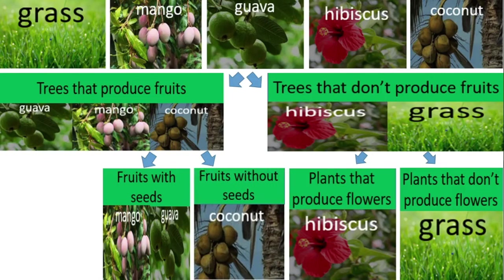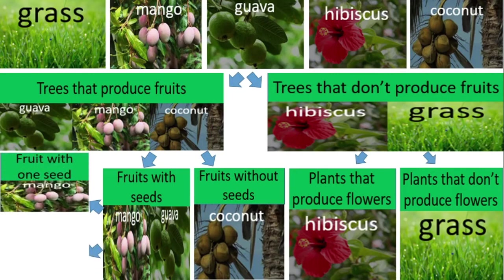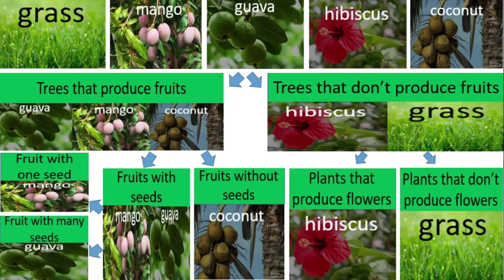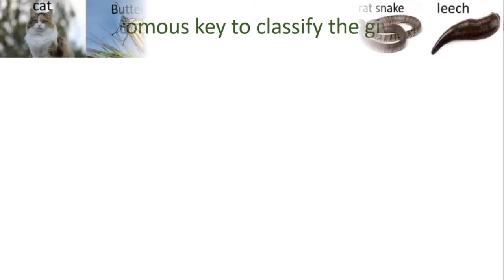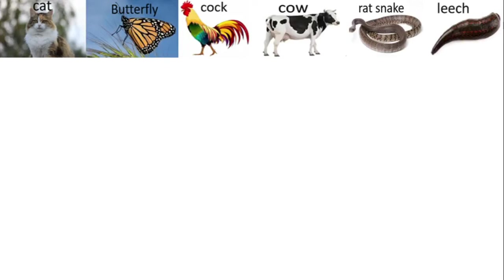Mango and guava can be categorized into two categories: mango under fruits with one seed, and guava under fruits with many seeds. Fourth activity: use a dichotomous key to classify the given animals — cat, butterfly, cock, cow, petty snake and leech.